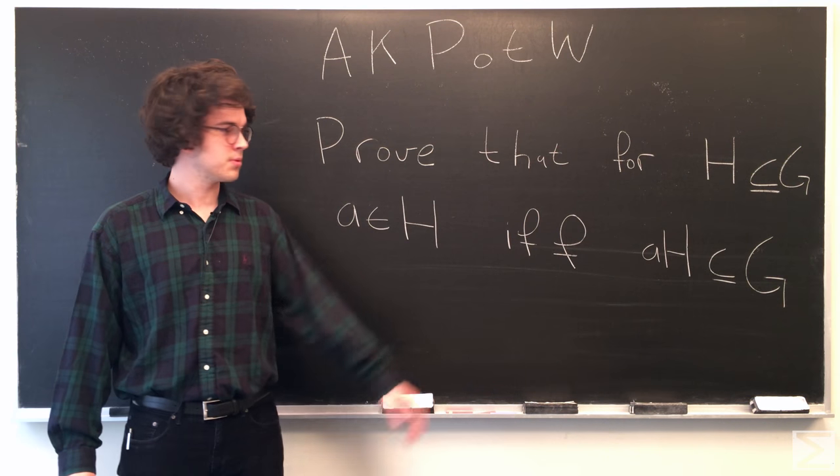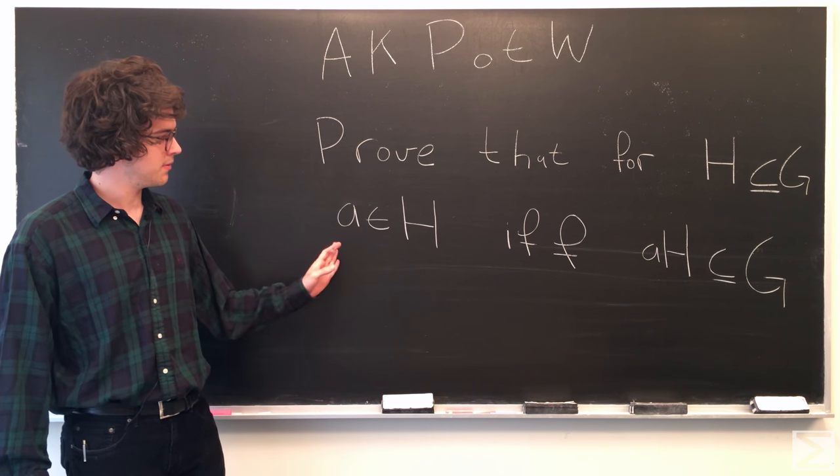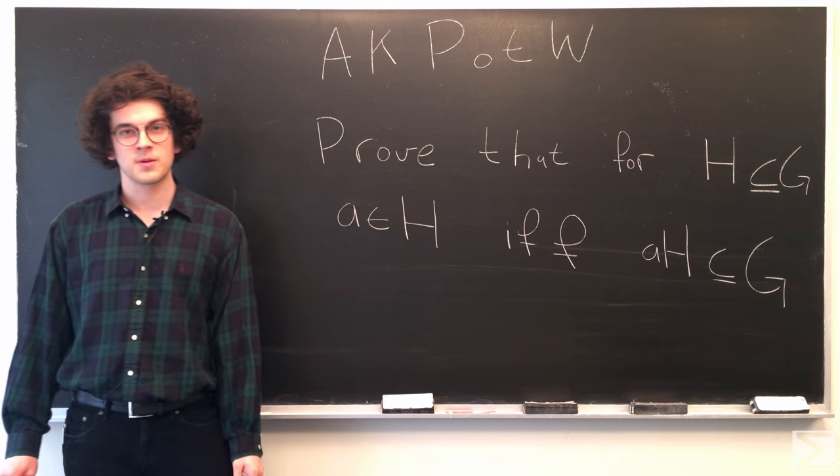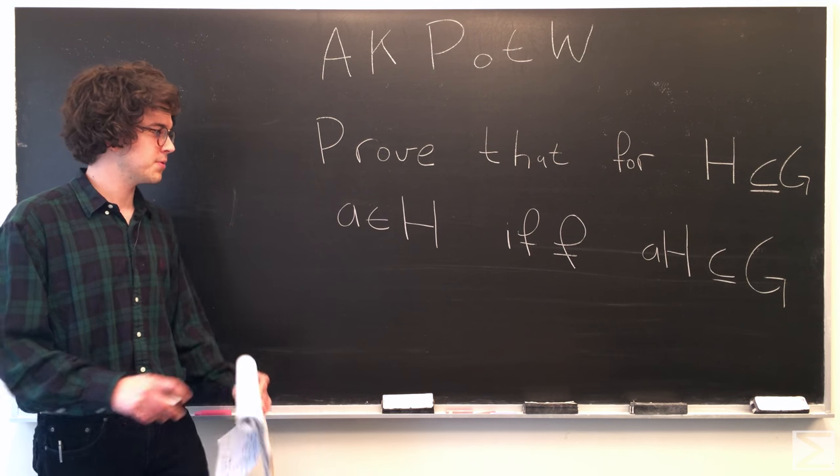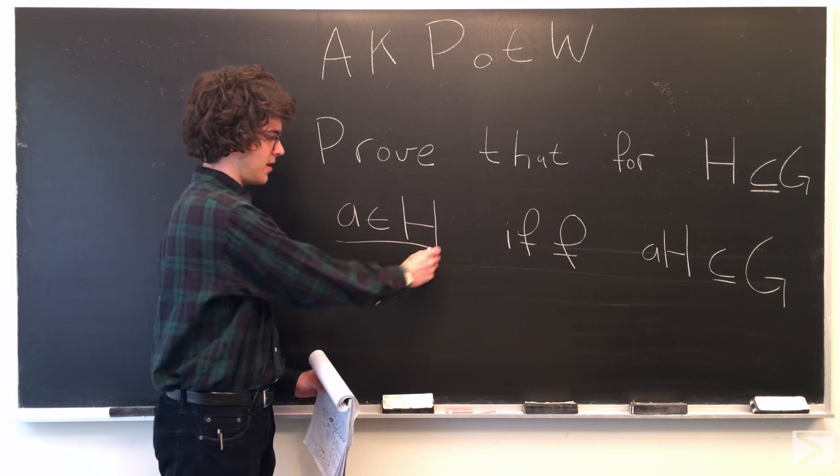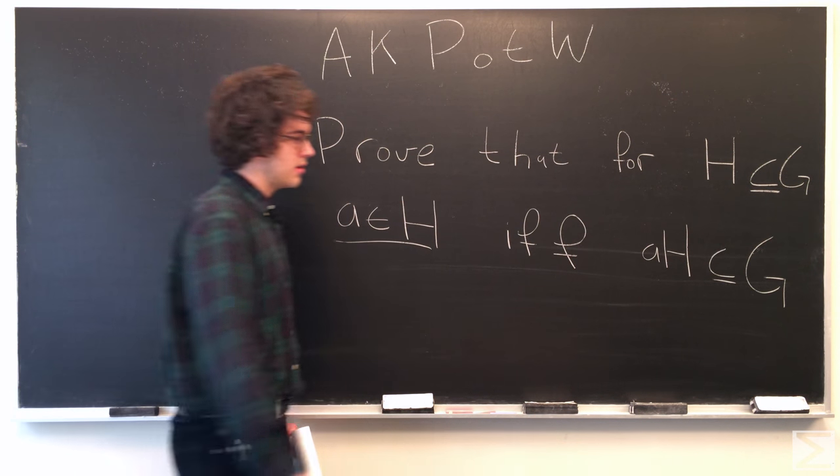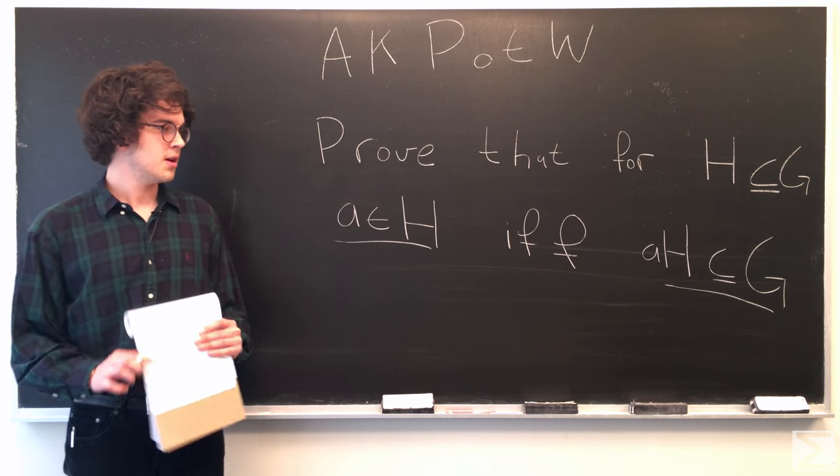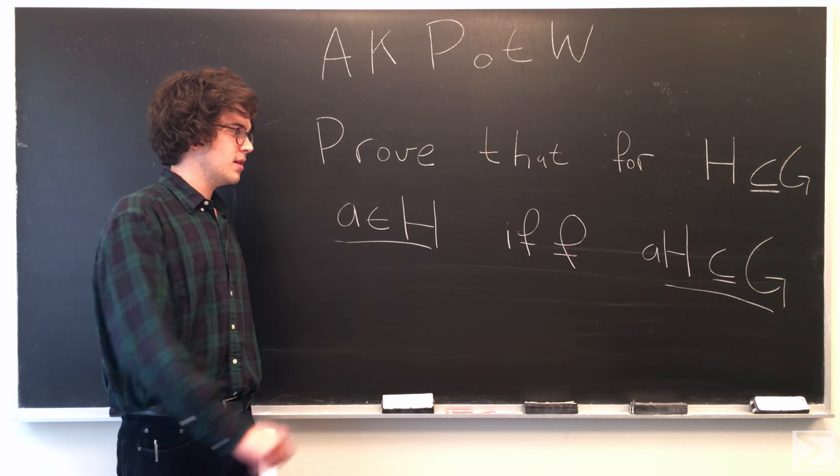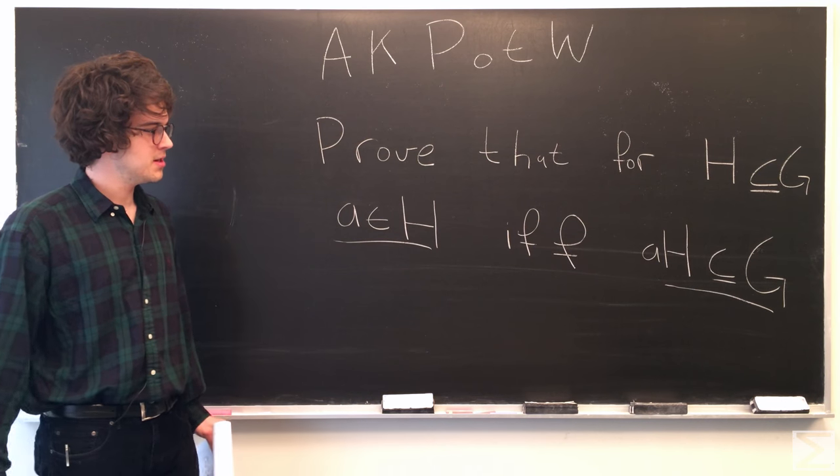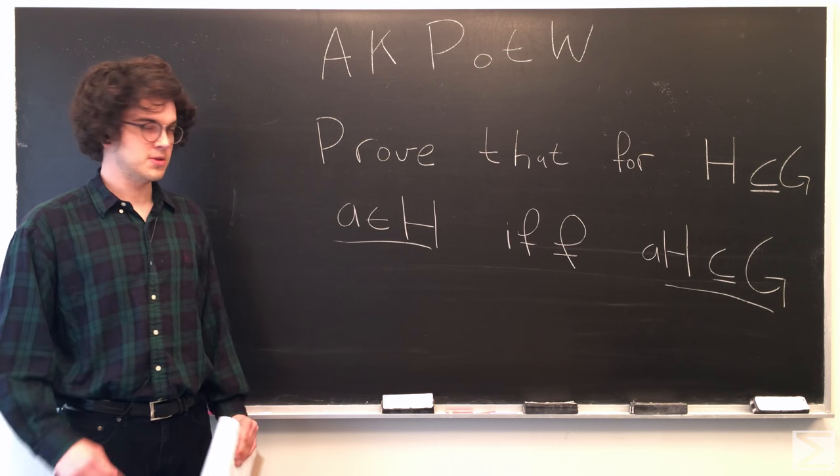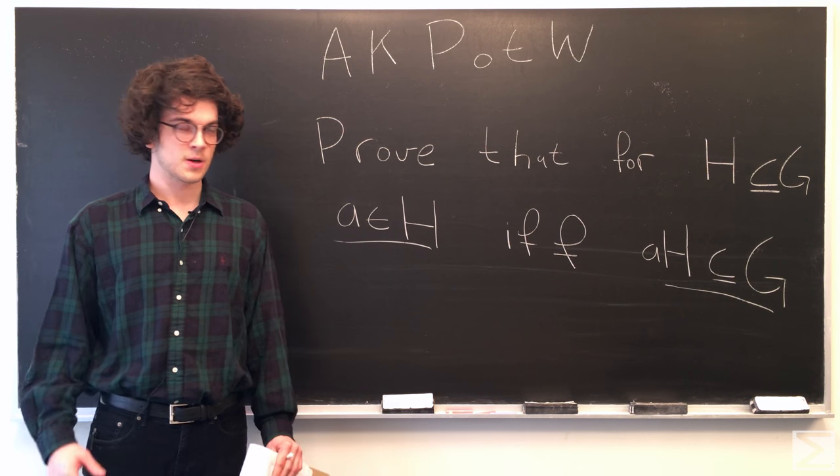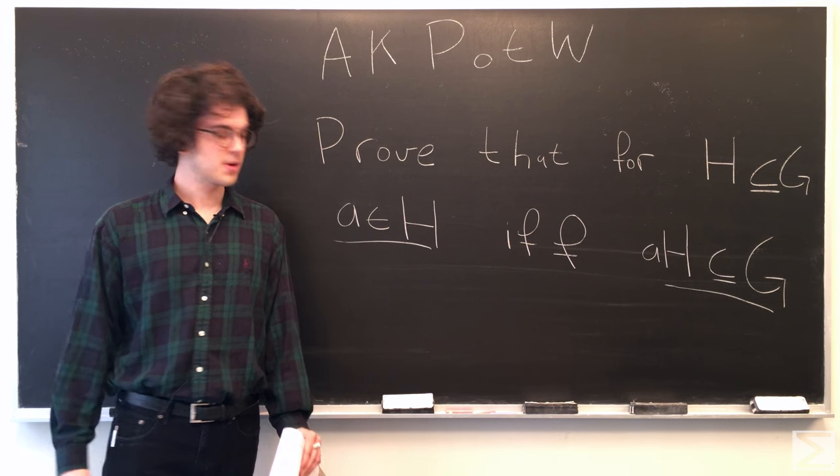So at the surface, it's a simple line of what we need to prove. But really, the if-and-only-if statement means that we have two things to prove. We have to prove if A is an element of H, then A-H is a subgroup of G. And we also have to prove that if A-H is a subgroup of G, then A is an element of H. So I'm going to rewrite this problem into two subproblems.